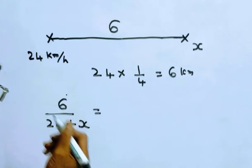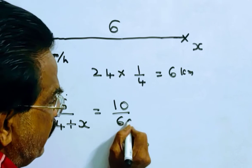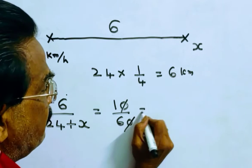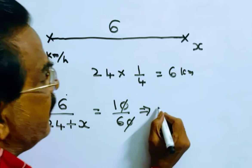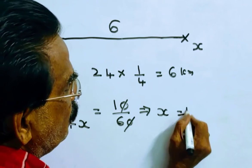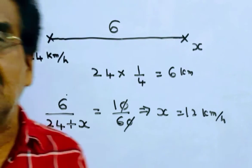the time to meet, time 10 minutes, 10 by 60. So it implies 24 plus x is equal to 36, it implies x is equal to 12 kmph, x is equal to 12 kmph is your answer.